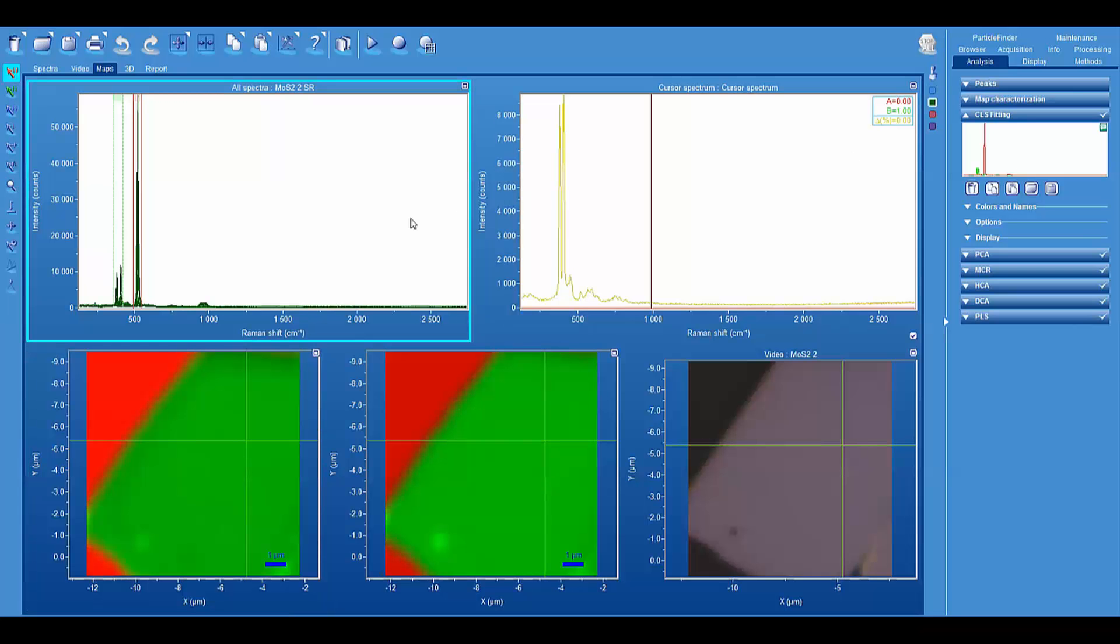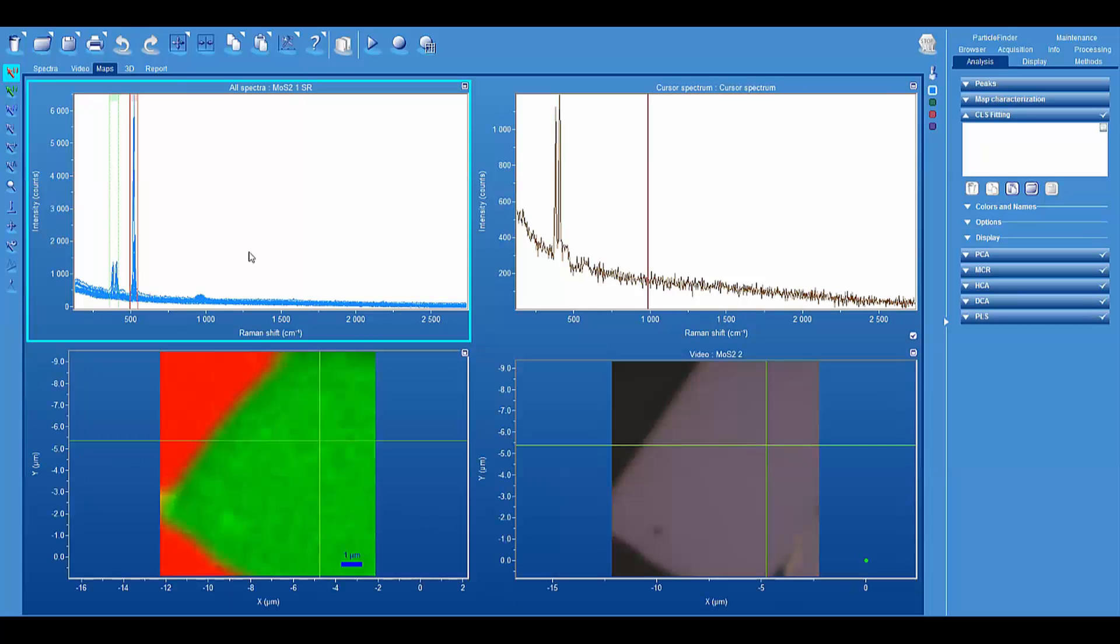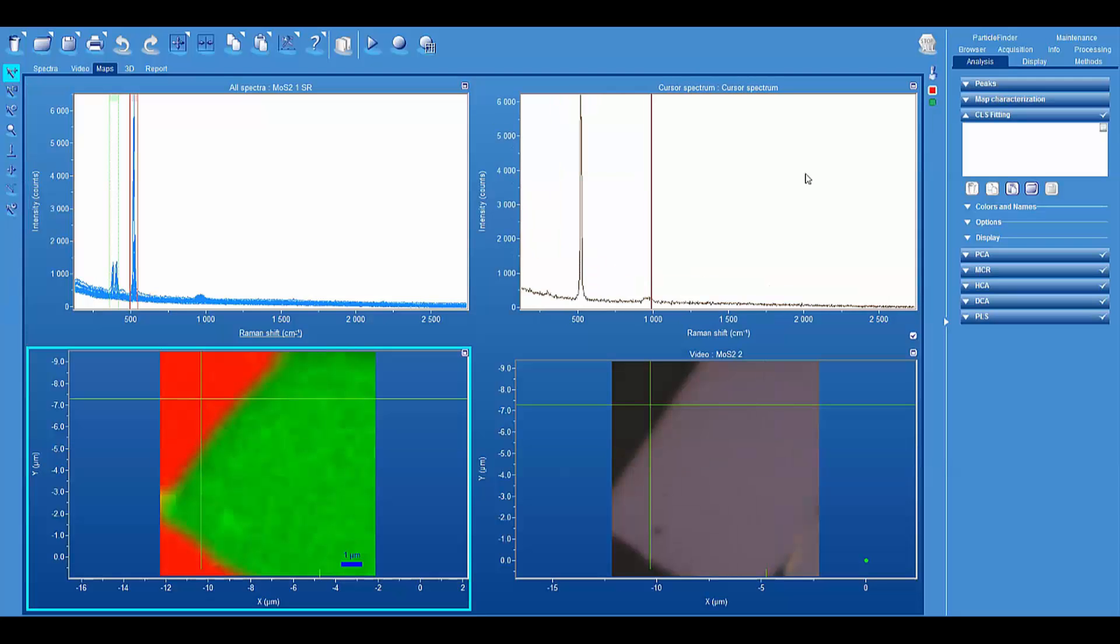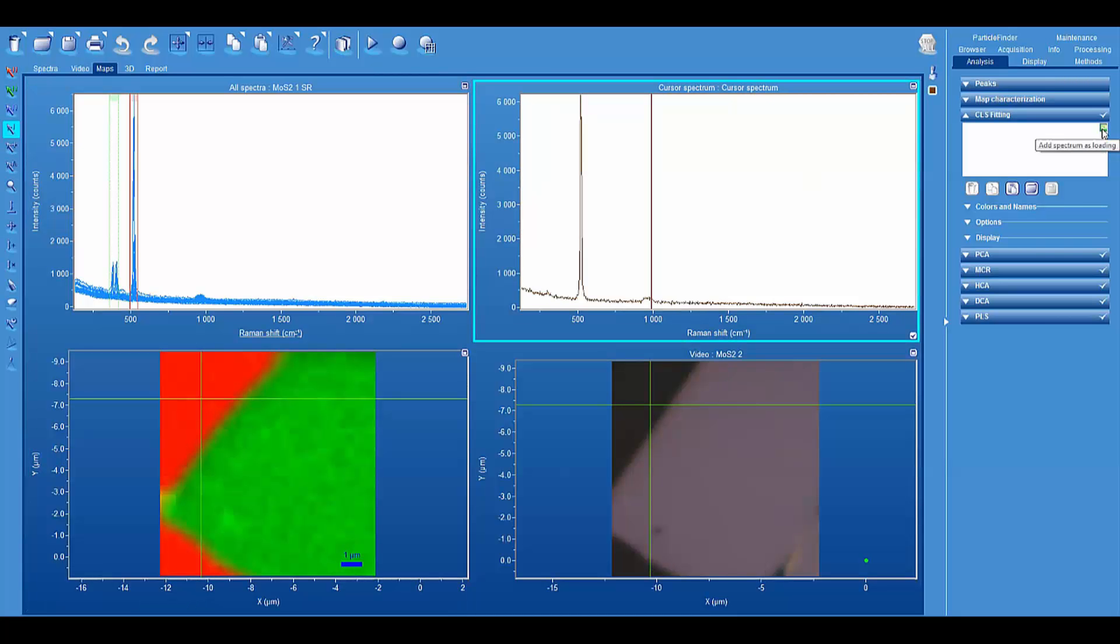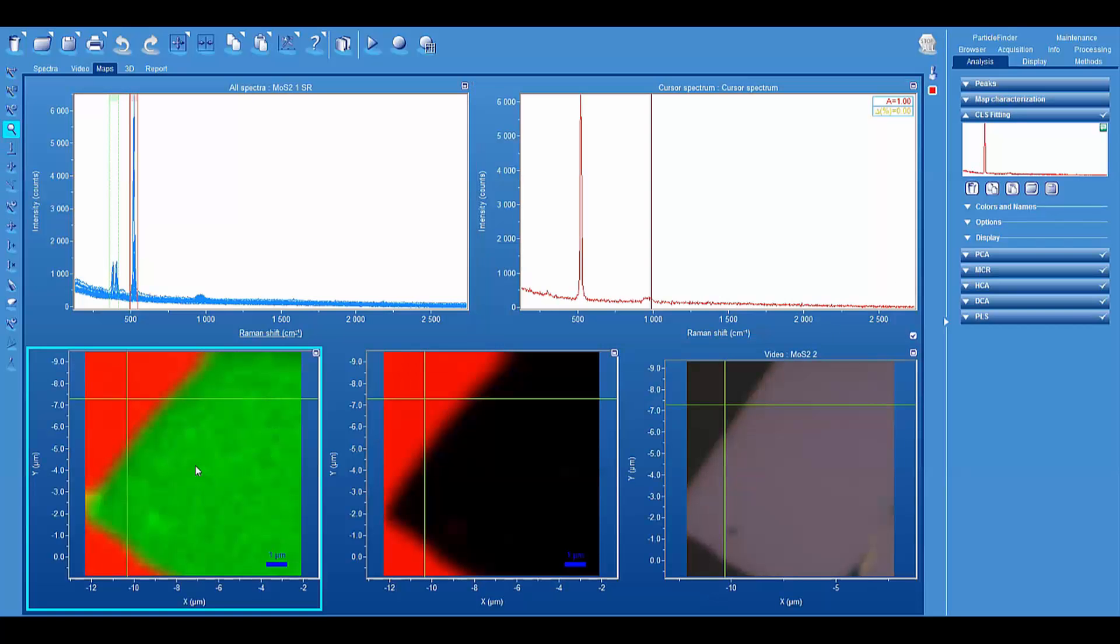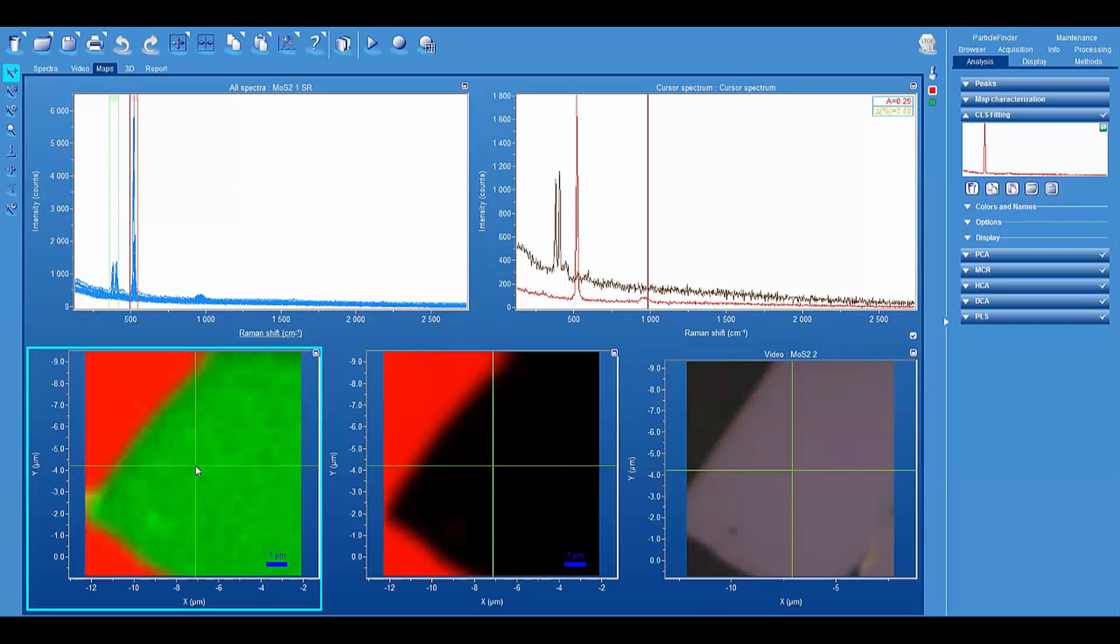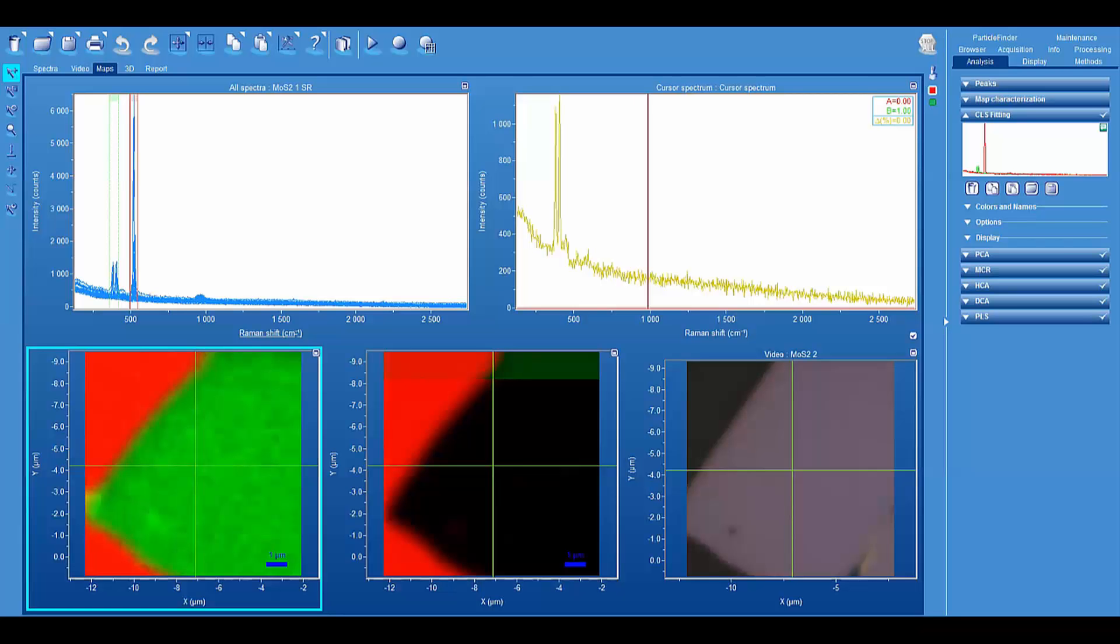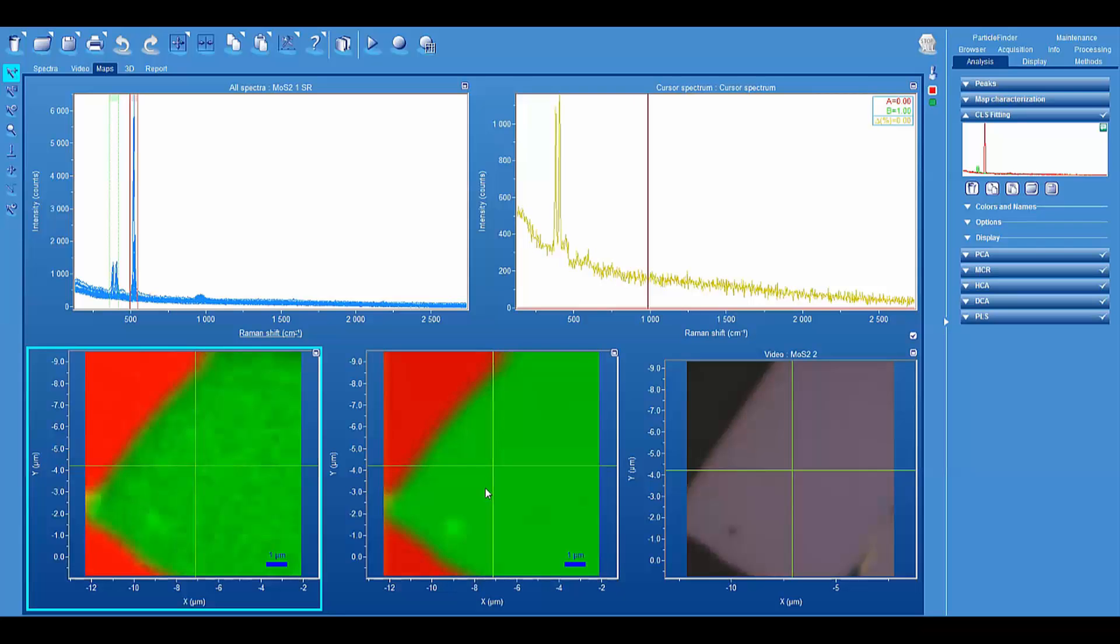Alright, so let's go back to our hyperspectral data set. This is for one second. Now let's look at the results from 100 millisecond integration time. And so let's run again our classical least squares. And we just enter that. Click on an area of molybdenum disulfide, enter that component, and there you see the image.